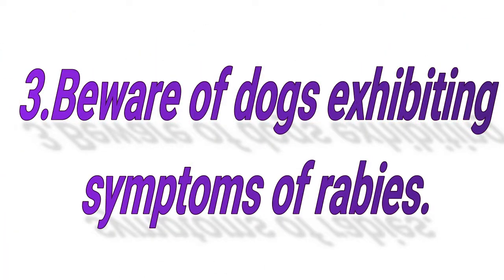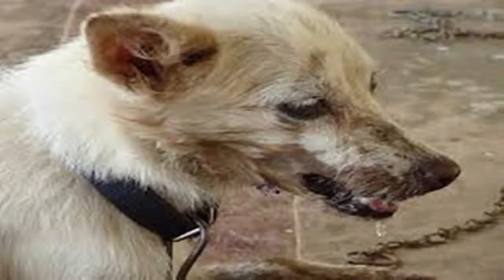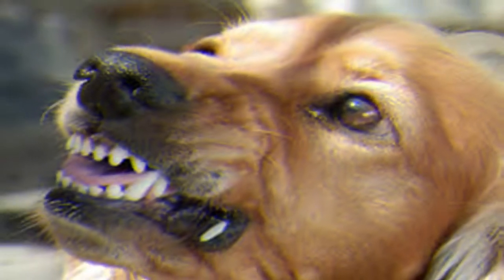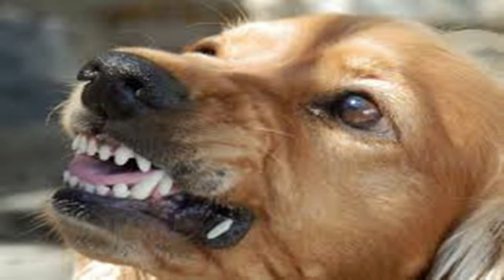Beware of dogs exhibiting symptoms of rabies. Rabies can affect all mammals, dogs included. A rabid dog might be restless, apprehensive, and aggressive. Dogs with rabies may bite or snap at anything with which they come into contact, including people, other animals, or even inanimate objects. Rabies is spread by bites from infected animals, and an infected dog may lick or chew the bite where they were infected.